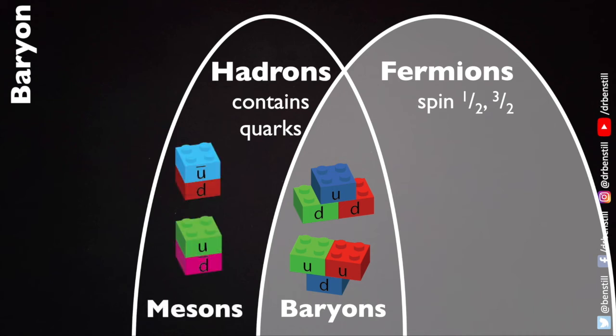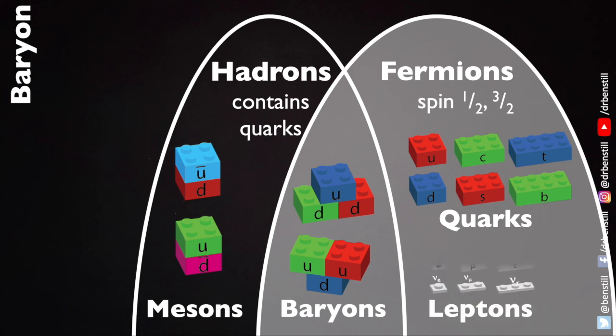Other hadrons include mesons and other fermions include the quarks themselves and the leptons, the electron, its heavier versions, and the neutrinos.